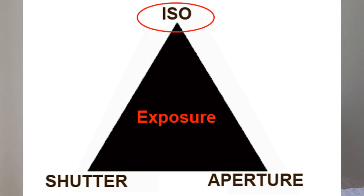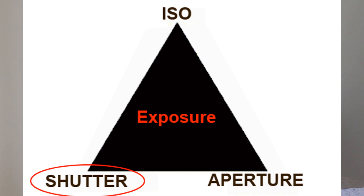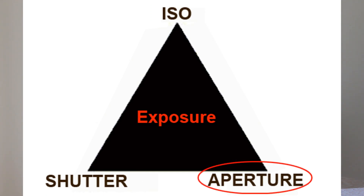ISO can reduce or increase the image quality. If we go to a higher ISO, it creates more digital noise which can deteriorate the quality. Shutter speed can blur or freeze camera or subject movement. And the aperture can increase or decrease the amount of our image that's actually in focus, so the aperture can be a very creative function.